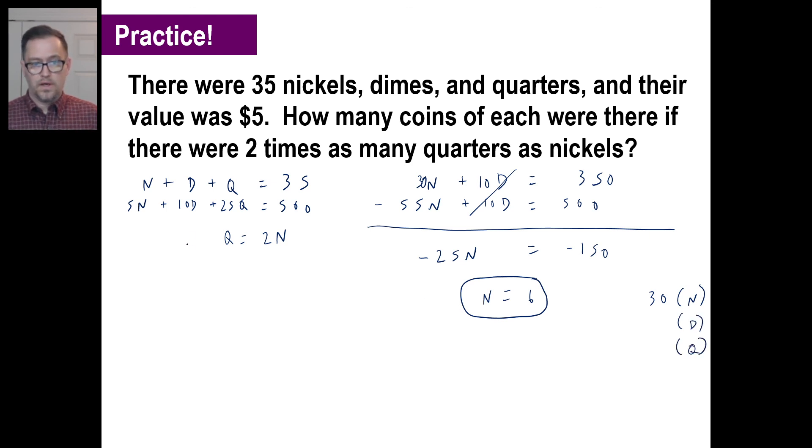If there are two times as many quarters as nickels, then we have 12 quarters. 12 times 25, if you have 12 quarters, how much money do you have? $3, or 300 cents. And then n plus d plus q is 35. We have n is 6, q is 12, so that's 18. Plus d is 35. So the d is going to be 35 minus 18, and that's going to be 17 dimes. That's your answer. Let's check it out. 17 dimes is 170 cents. So 30 plus 170 is 200 cents, plus 300 is $5. We just proved it. See you guys next time.